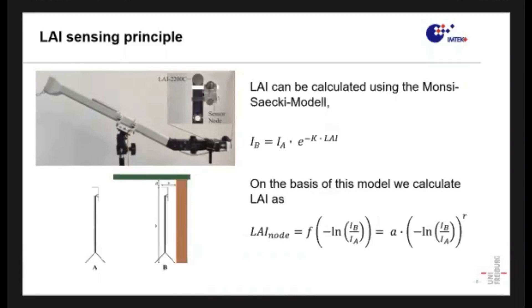So on the basis of this model, we can use this formula here which allows us to calculate the LAI as a function of the logarithm of the ratio between the intensity of the light below and above the canopy. This calibration function we have defined, and the most suitable solution for us is a power regression model. For the calibration, we have additionally taken care that the measurements are executed with the state-of-the-art instrument, which is the LAI-2200, and our newly developed sensor node in parallel, as you can see with this plan.